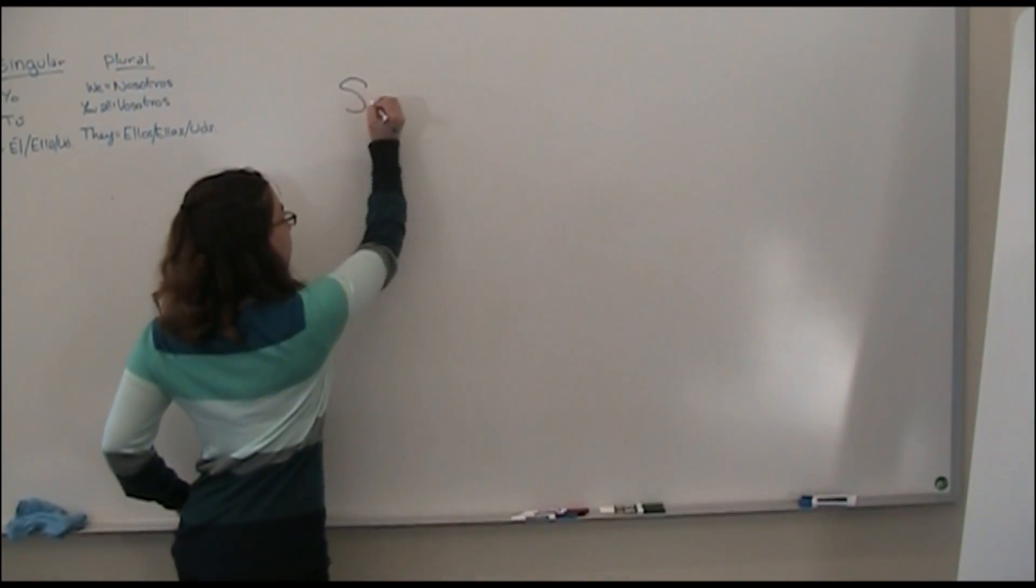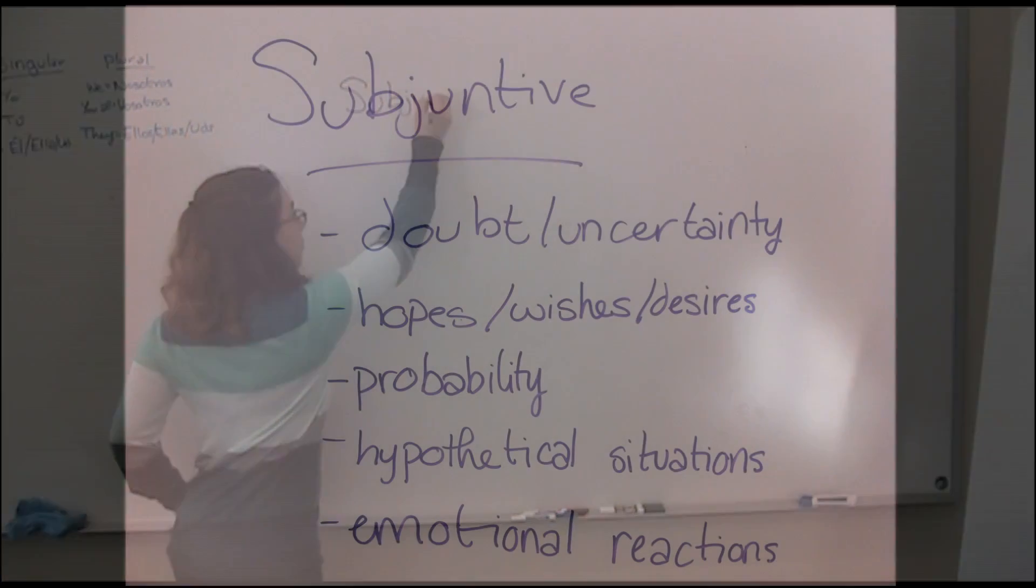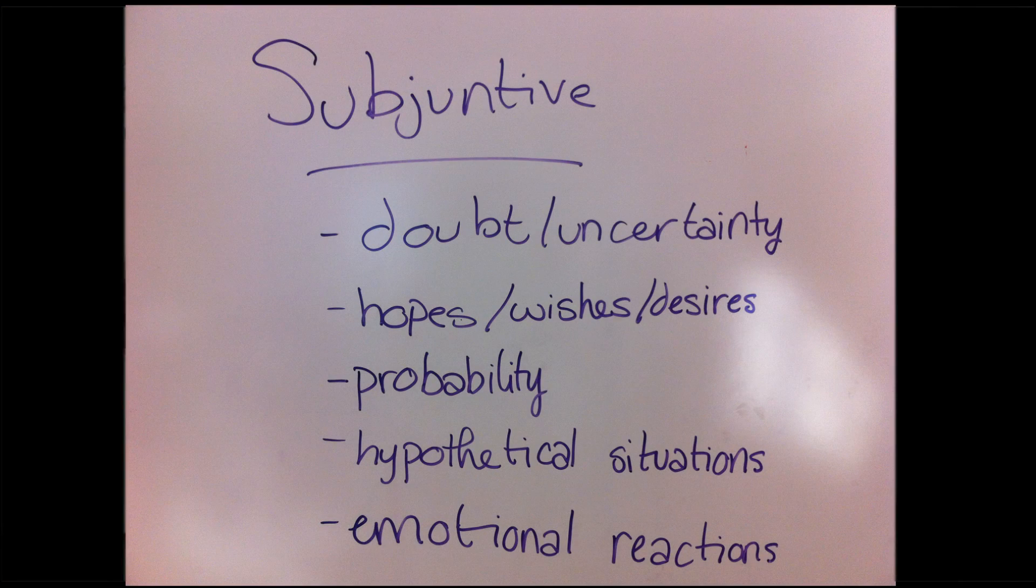So the subjunctive is used for things of doubt or uncertainty, used for hopes, wishes, desires. It is used for probability or hypothetical situations, as well as it's used for emotional reactions to something.